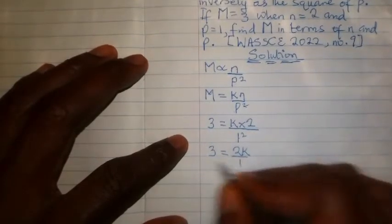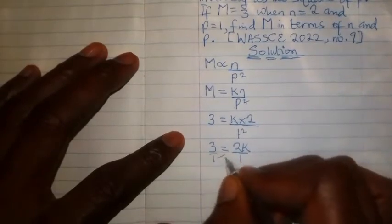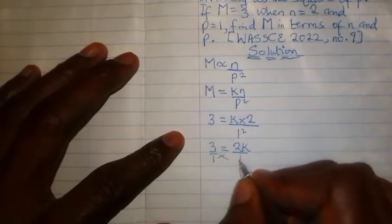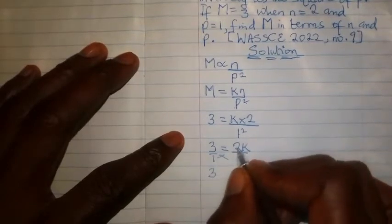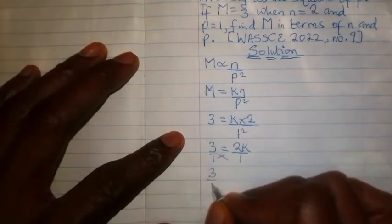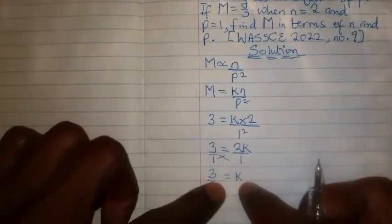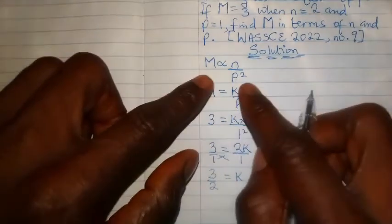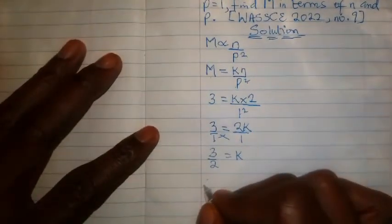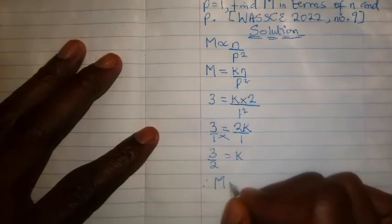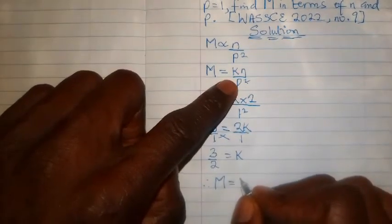end up being 1. So in this case now we need to make k the subject by cross multiplying. So 1 times 3 will give us 3, then 2 times 1 will give us 2, and that is the value for k. Now we bring this value for k and plug it into what we have here. So in doing so, therefore we can say that m equals what? k. What is k? k is